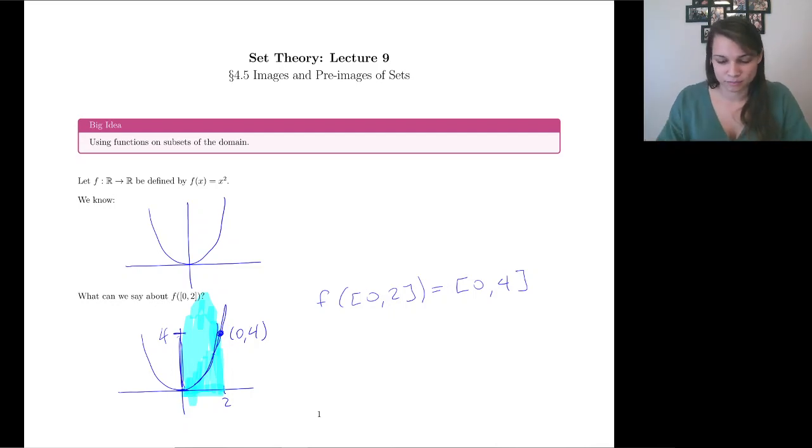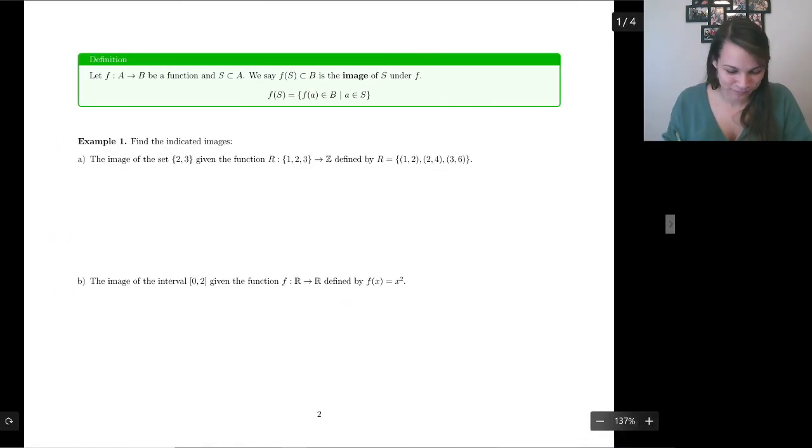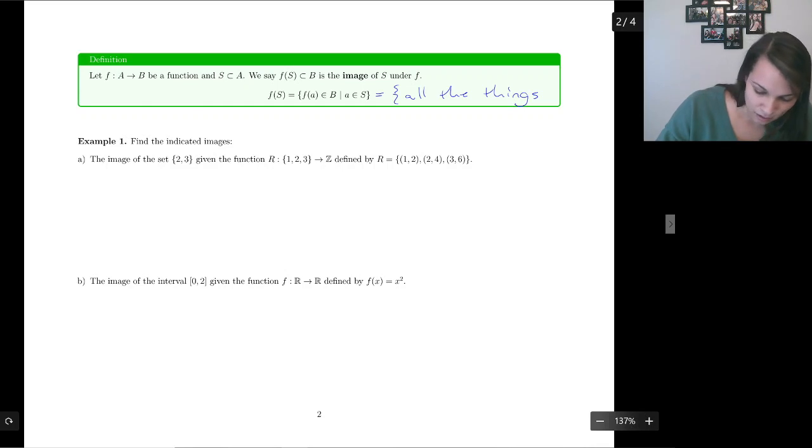But now we're going to stick some gross definition onto it because we're mathematicians, and why not? So here we go. So given our function f going from A to B, we're going to talk about a subset of A, a subset called S. So we're going to say f of this subset S, which is going to end up being a subset of B, is going to be the image of S under f. And that set is denoted with this formal notation. But really, all this interprets to in English is all the things S maps to.